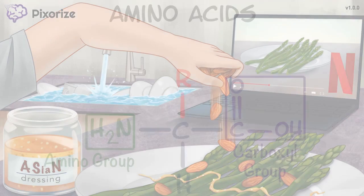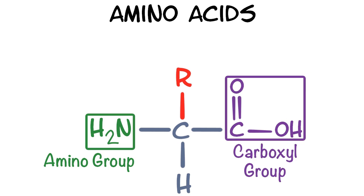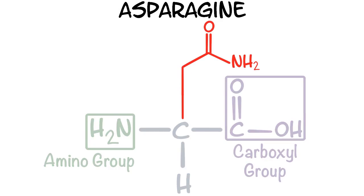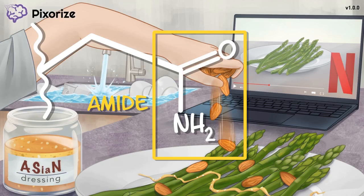Recall that all amino acids have a common structure centered around an alpha carbon, attached to an amino group, a carboxyl group, a hydrogen, and an R group or side chain. This R group is unique for each amino acid, and for asparagine, it's an amide at the end of a one-carbon chain. Doesn't asparagine's R group look a little bit like your bent arm holding the almonds? With this structure in your mind, let's move on to discuss some other important properties of asparagine.